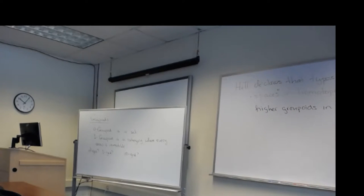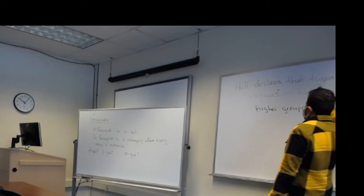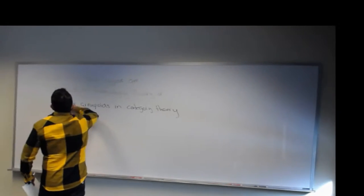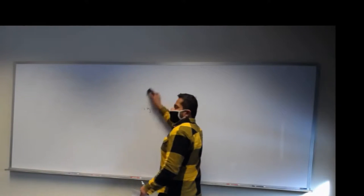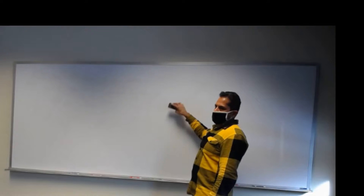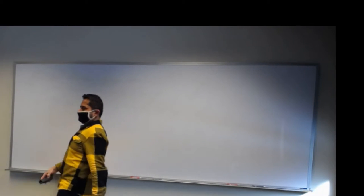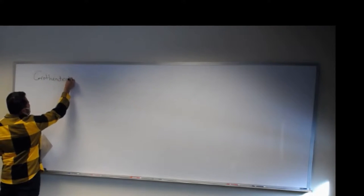Category theory is still an evolving field. There's no one answer for all of these questions. We do have one-categories that are pretty much set, but higher categories are still a work in progress. There is one motivating and guiding principle in higher categories, and it's called Grothendieck's homotopy hypothesis, which kind of motivates these definitions.